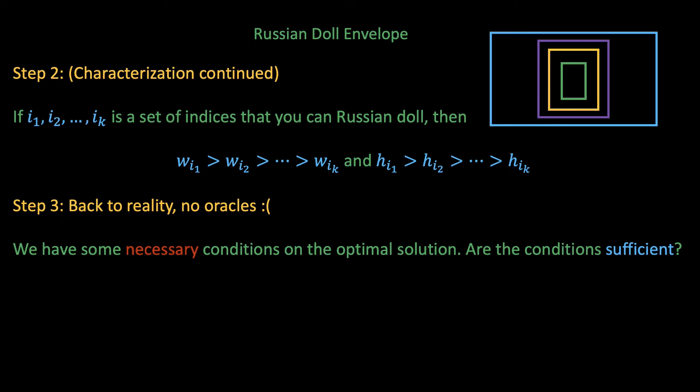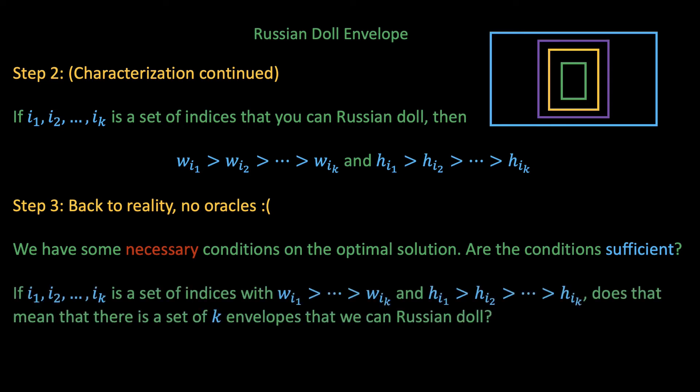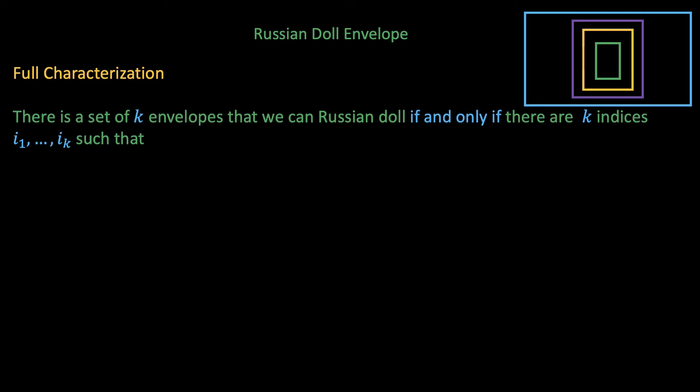What I mean here is, suppose instead I told you that there are k indices i1 to ik with descending width and height. Does that mean that there are k envelopes that can be fit inside each other? If you think about it for a while, you realize that the answer is simply yes. Simply choose envelopes ei1, ei2 to eik and those must fit inside one another, by definition. What we have here is called a full characterization of the optimal solution. We just proved that there is a set of k envelopes that we can Russian doll if and only if there are k indices i1 to ik with descending weights and heights.